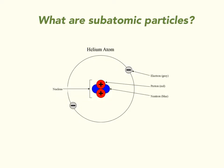First of all, we need to know what a subatomic particle is. If we break down the word: sub means under or below, atomic means the atom, and particles just mean really small things. So these are the things that make up an atom.